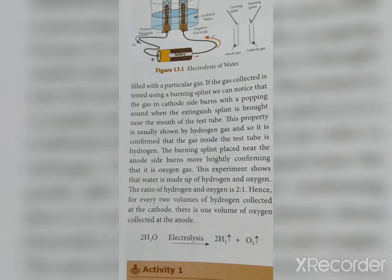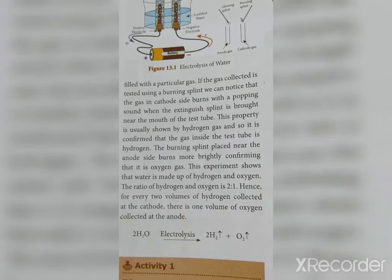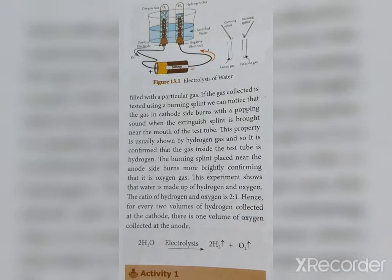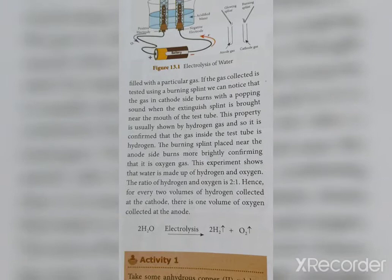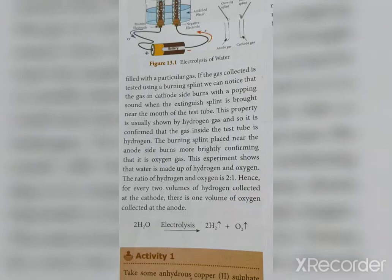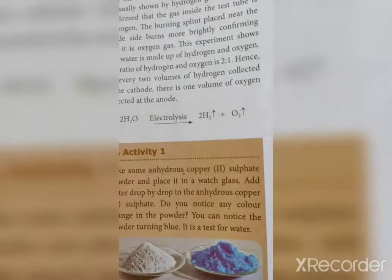This property is usually shown by hydrogen gas, so it is confirmed that the gas inside the cathode test tube is hydrogen. The burning splint placed near the anode side burns more brightly, confirming that it is oxygen gas. This experiment shows that water is made up of hydrogen and oxygen in the ratio 2:1. The equation is: 2H₂O → 2H₂ + O₂.